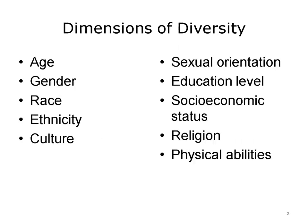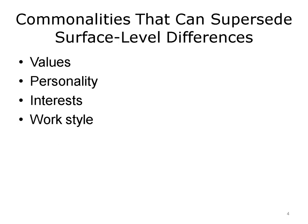Diversity has multiple dimensions. Those most discussed include age, gender, race, ethnicity, and culture. Other dimensions include education level, sexual orientation, physical ability, socioeconomic status, and religion. There are also differences related to less immediately apparent characteristics, such as personality, values, interests, and approaches to work or problem solving. When individuals find common ground in these areas, differences in more superficial characteristics, such as age and gender, recede into the background.